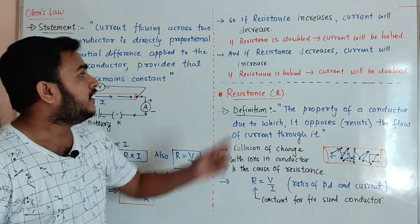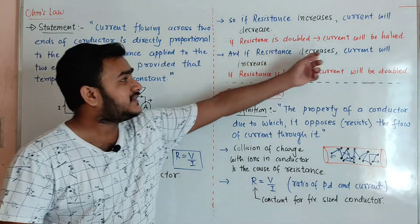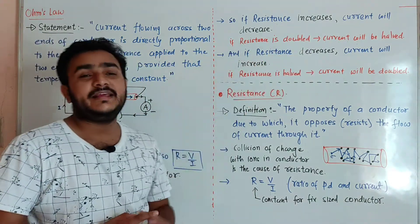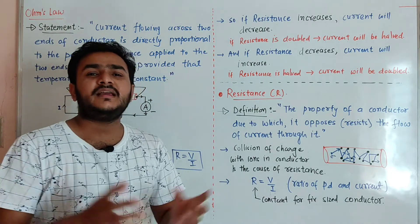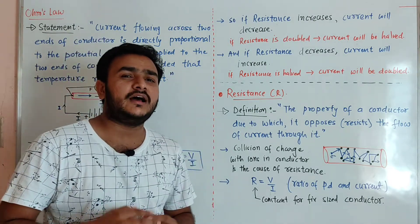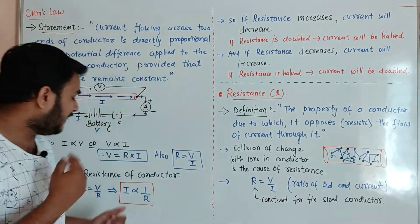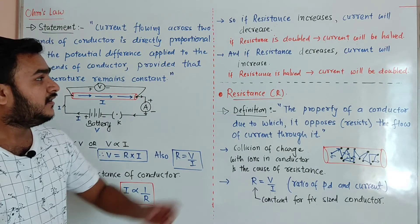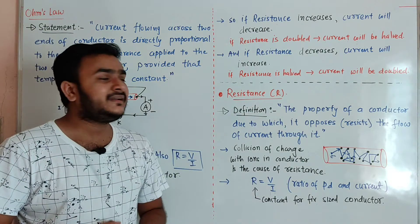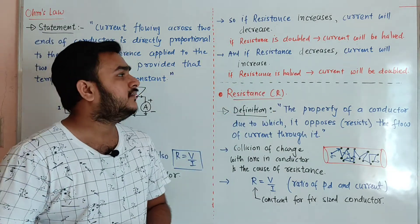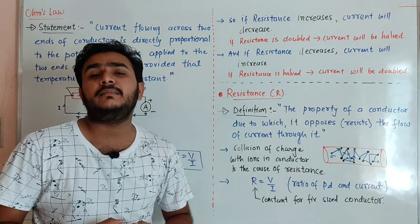Alternatively, if the resistance decreases, current will increase. For that case, if resistance is half, then current will be double.